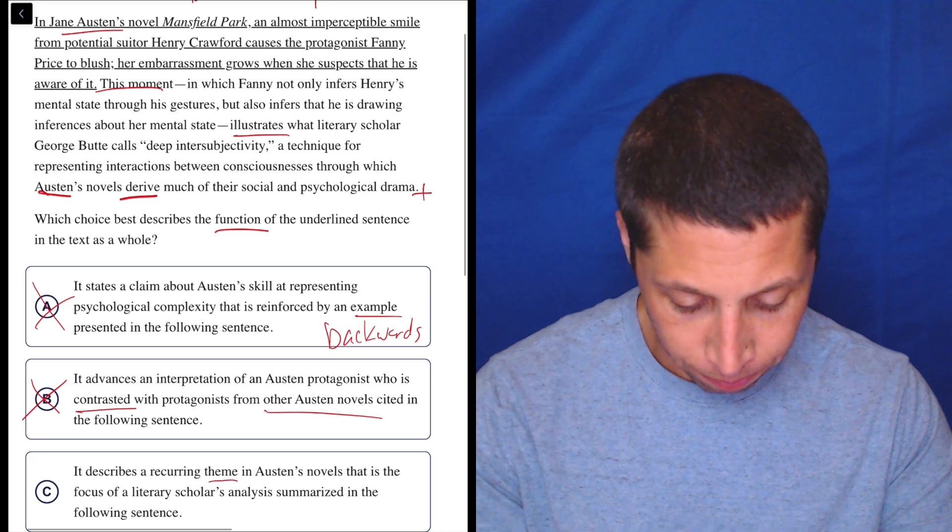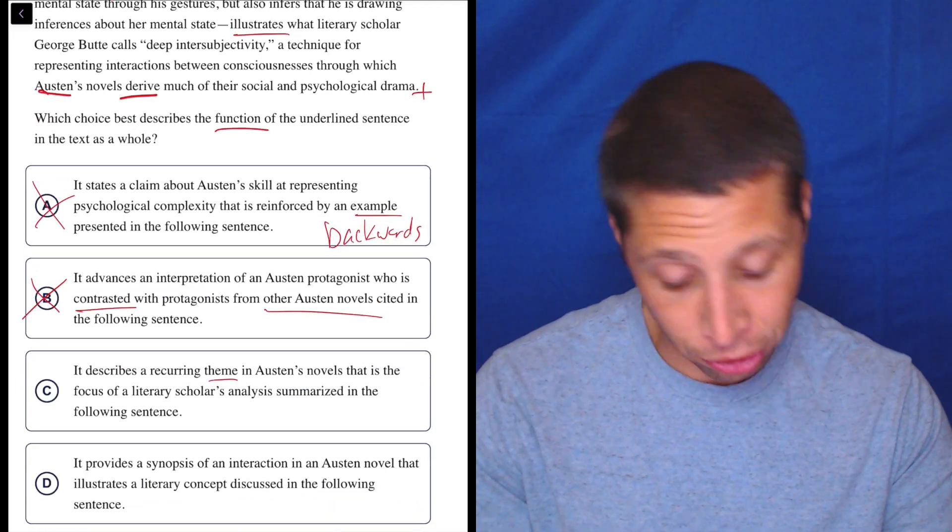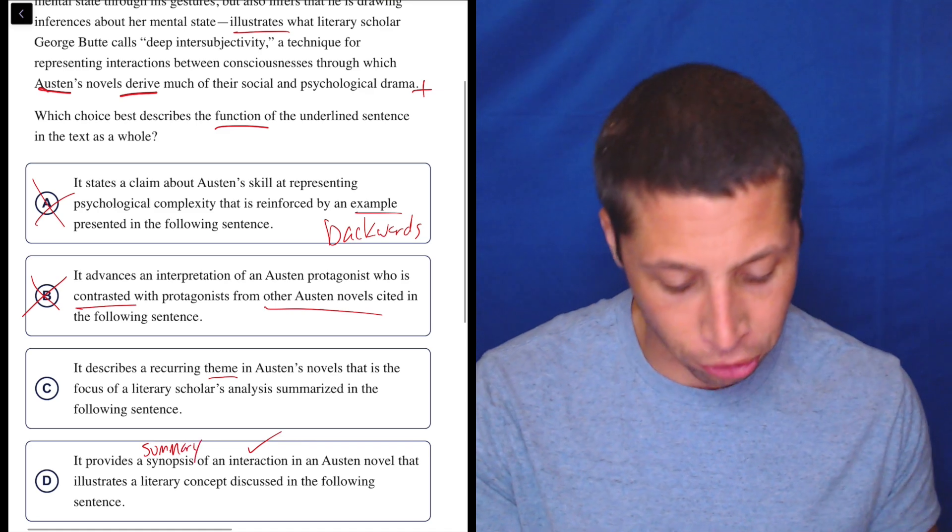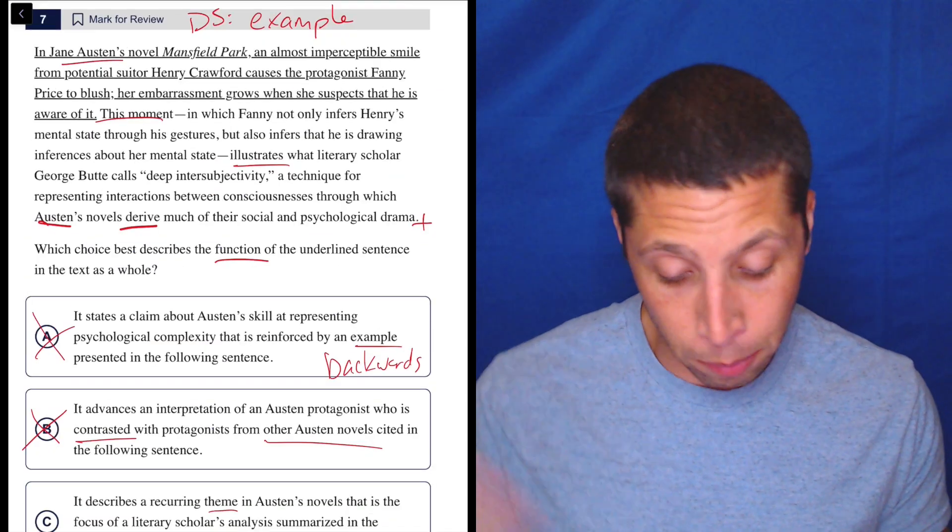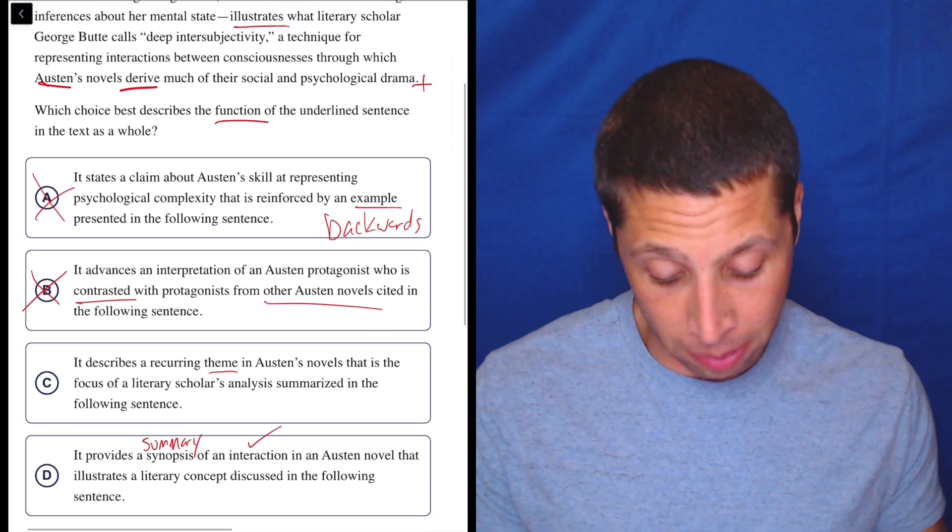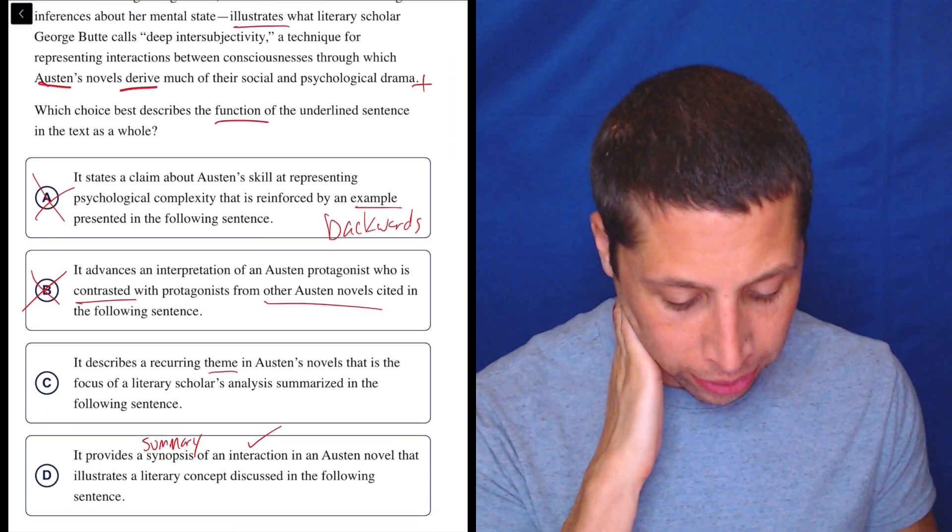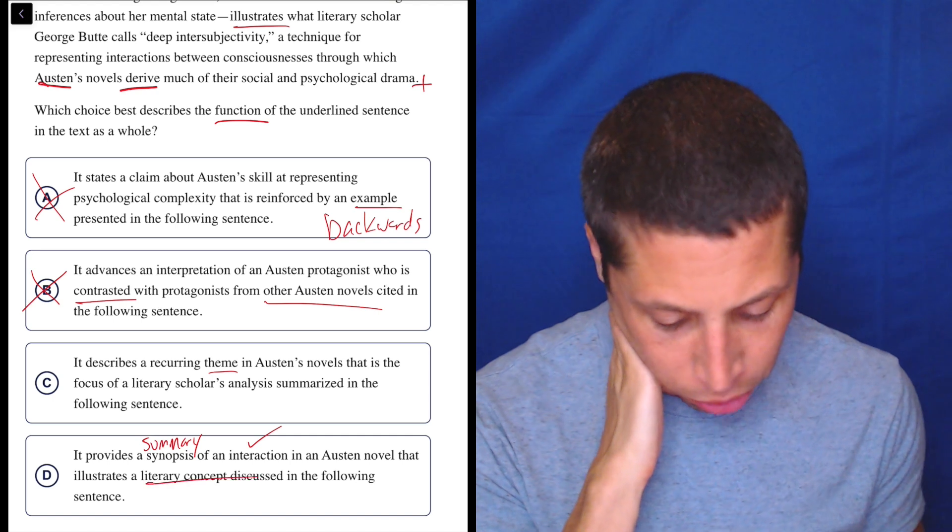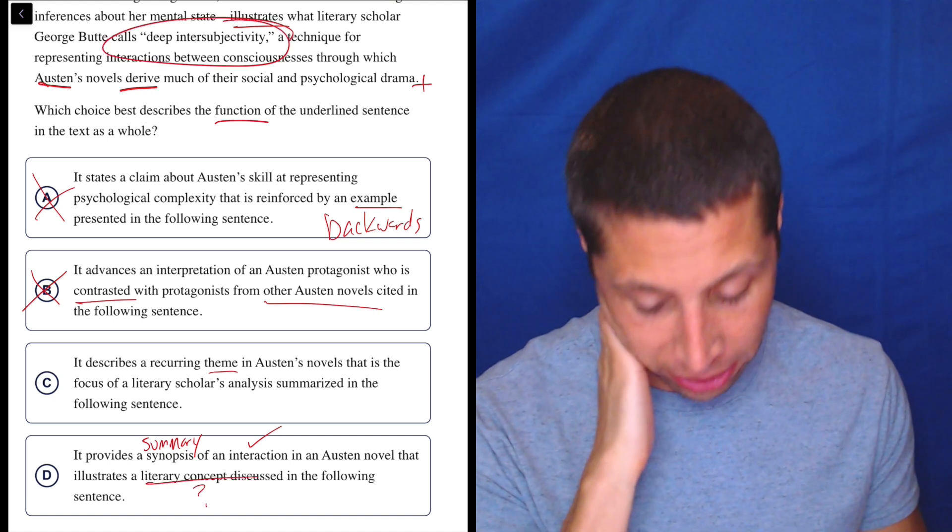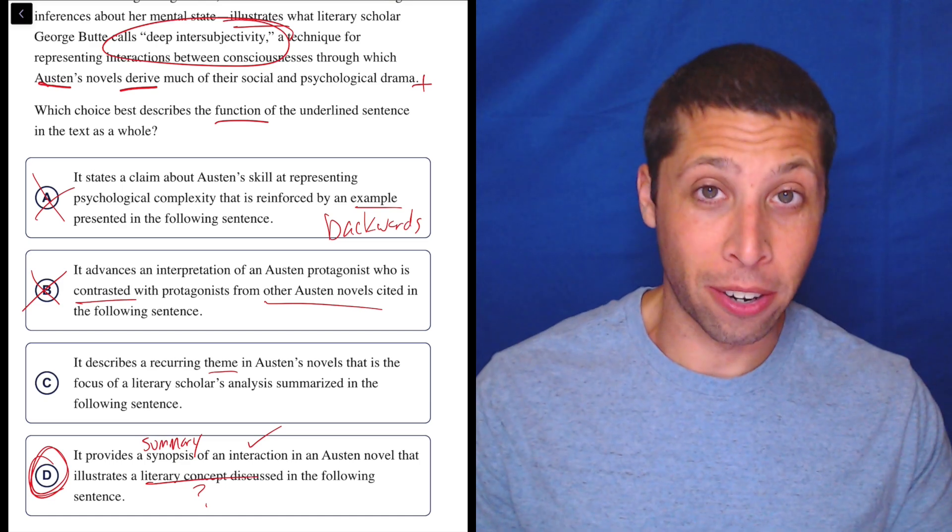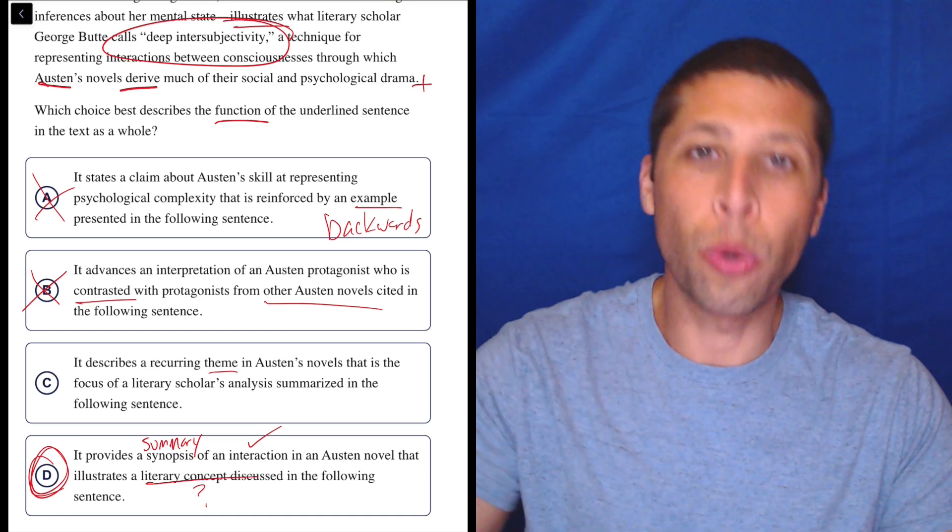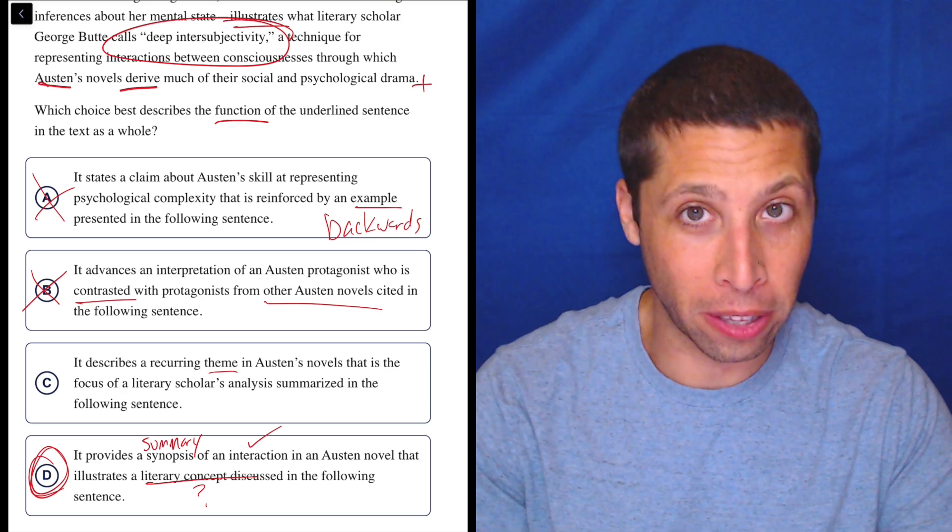Let's look at D. It provides a synopsis of an interaction. So synopsis means summary - summary of an interaction in an Austen novel. Yeah, right, imperceptible smile, she blushes, that seems like a summary of an interaction that illustrates a literary concept discussed in the following sentence. So turn this into a question. What's the literary concept? Deep intersubjectivity. So look, I would pick D here, no doubt, because I understand it better and I can turn it into questions and then those questions are very easy to answer by pointing to the line.